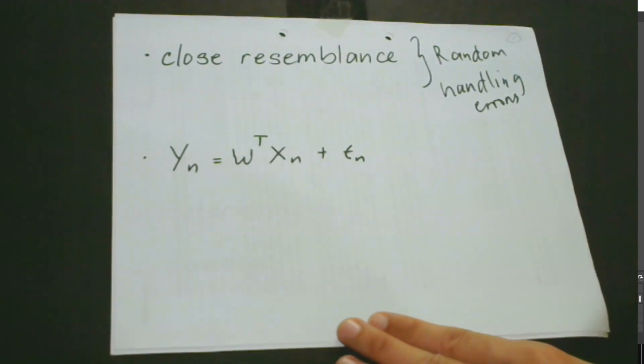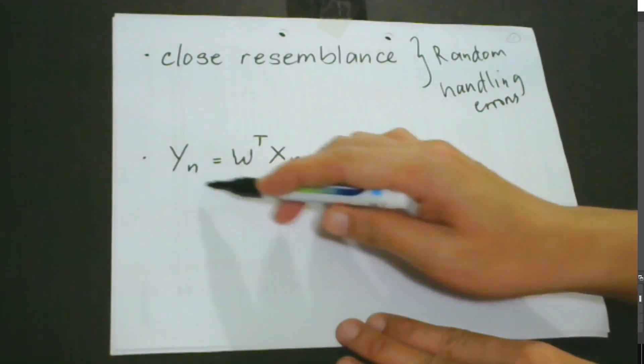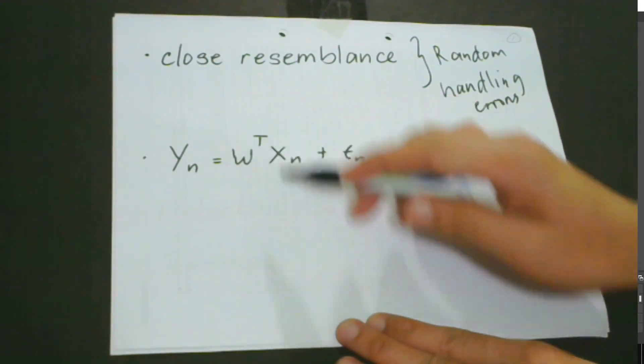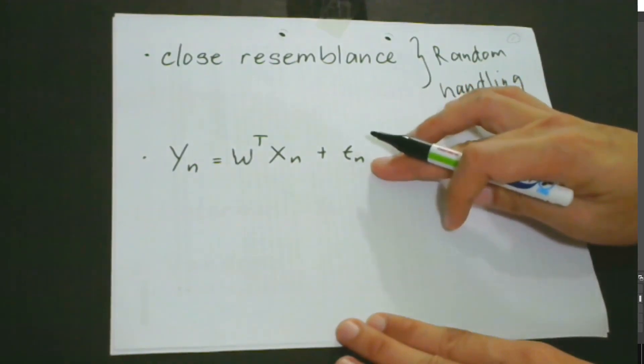The generative model has this form. We have Y_n equals W^T X_n plus this random variable epsilon_n.